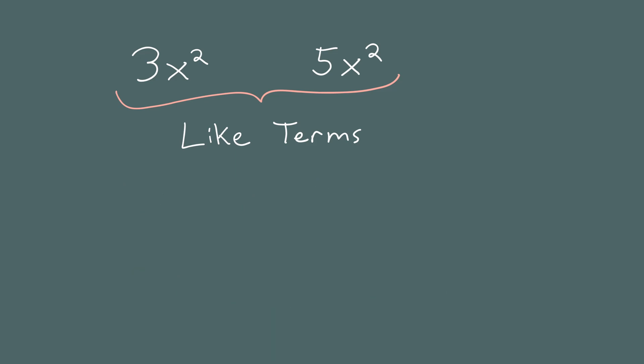You can also subtract like terms. What is 5x squared minus 3x squared? Put yourself into a math trance and think about what this is saying. It says you start with 5x squareds and then take away 3x squareds. This leaves you with 2x squareds. So you just subtract the numbers to combine these two like terms.